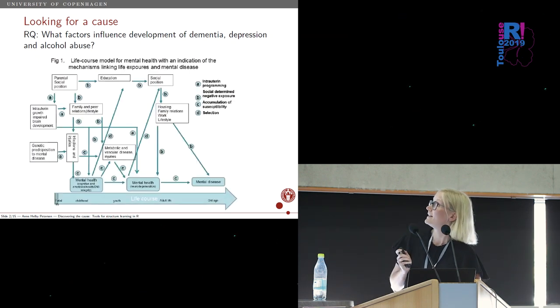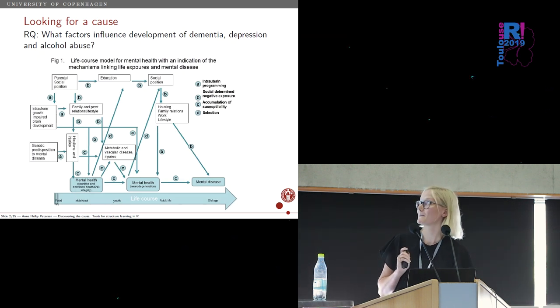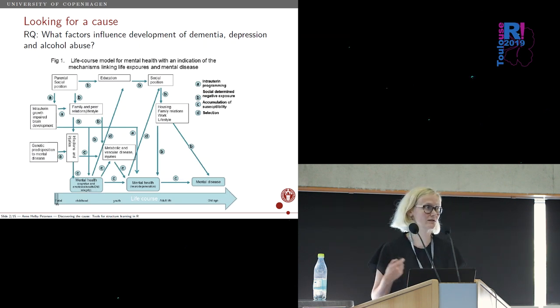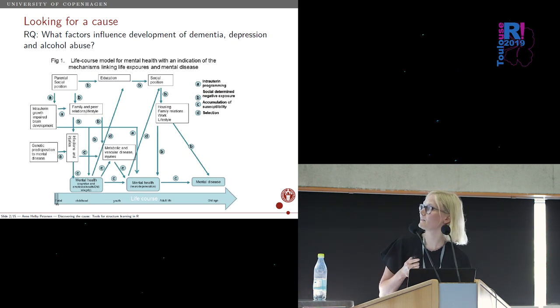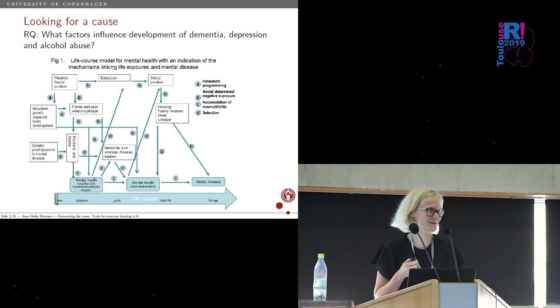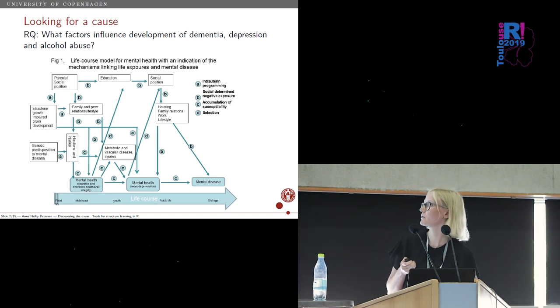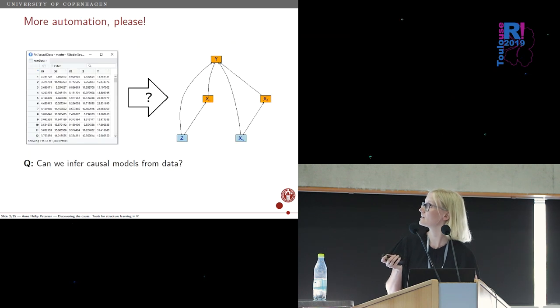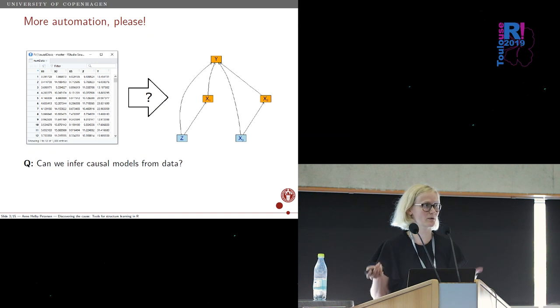What we can do is ask our doctor friends to draw a fancy graph for us. So I did that, and this is what came out of it. The idea here is that each of the nodes corresponds to some variables, and each edge corresponds to a causal link. For instance, here we see that parental social position is supposed to be a cause of education, which causes social position, and so on down to mental disease. One of the ideas in causal discovery is to ask the question: can we infer these causal models from the data instead of just proposing them from theory?